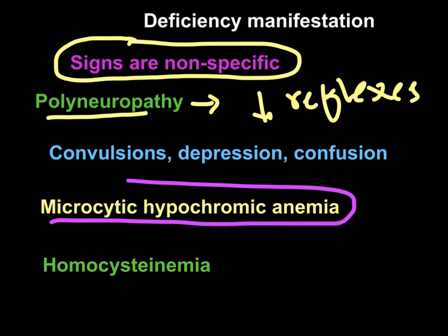Microcytic hypochromic anemia can also be seen in pyridoxal phosphate deficiency, because the rate-limiting enzyme for heme synthesis — delta-aminolevulinic acid synthase — needs pyridoxal phosphate. In its deficiency, delta-aminolevulinic acid decreases, heme synthesis decreases, hemoglobin synthesis decreases, leading to a microcytic hypochromic anemia picture.